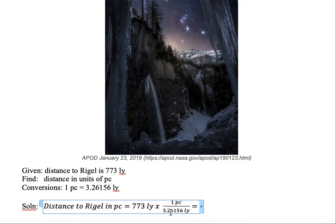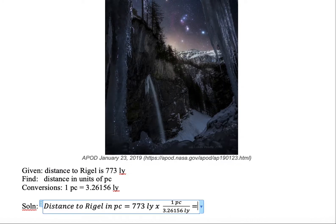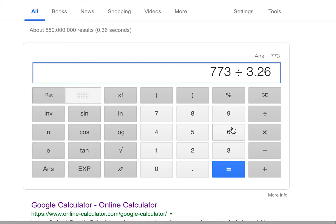Now we need to divide it by 3.26156. So we have the division symbol in our calculator. 3 point, let's check it, 26156. 2, 6, 1, 5, 6. And we hit the equal sign.